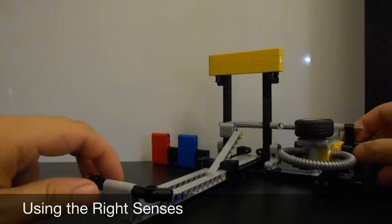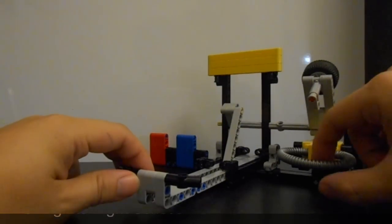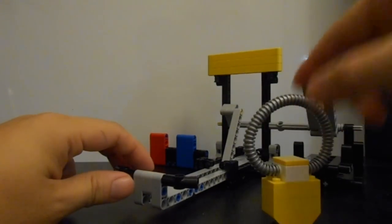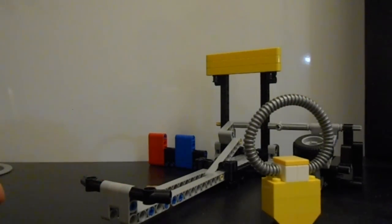This mission is called using the right senses. It contains another loop to collect. To release the loop, the robot must simply push the slider forward.